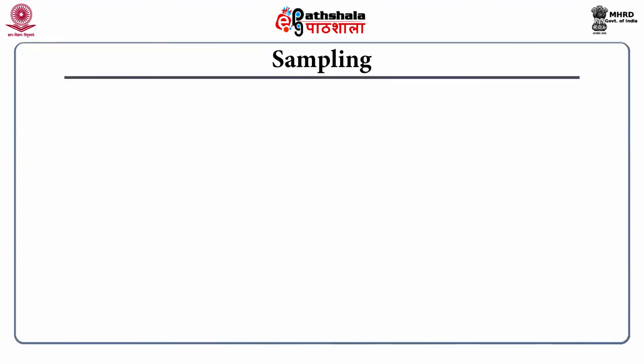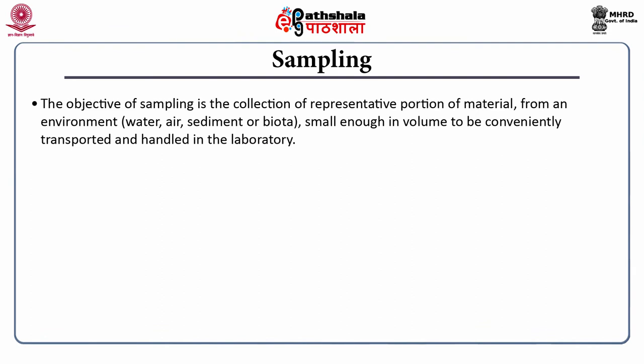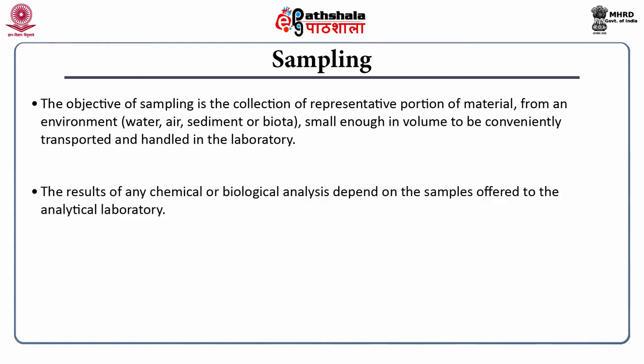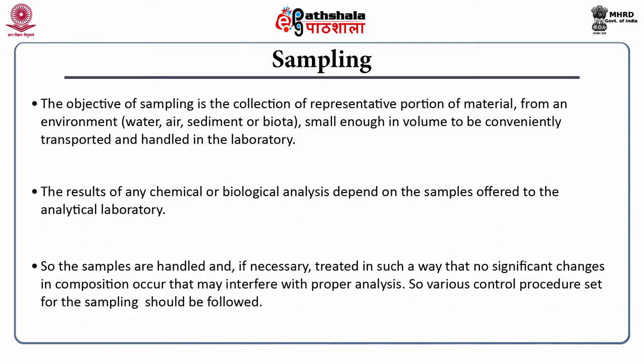What is sampling? The objective of sampling is the collection of a representative portion of material from any environmental matrix — that may be water, air, sediment, or biota — small enough in volume to be conveniently transported and handled in the laboratory for the purpose of analysis. The results of any chemical or biological analysis depend on the samples offered to the analytical laboratory, so samples must be handled and if necessary treated such that no significant changes in composition occur. Various control procedures set for sampling should be followed.